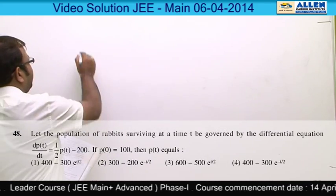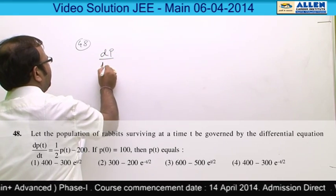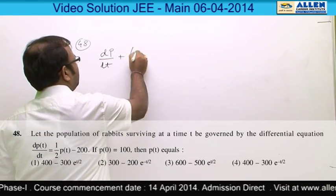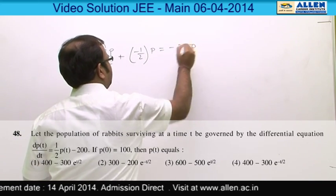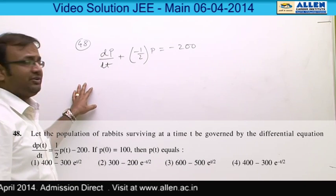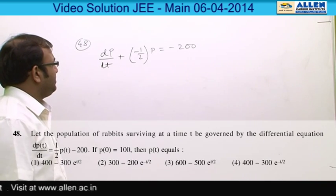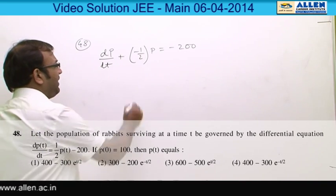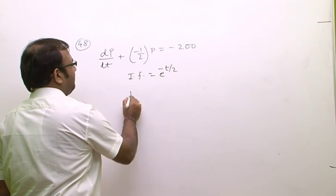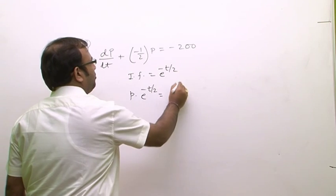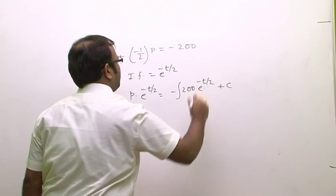Question 48: the differential equation for rabbit population is rearranged as dP/dt - (1/2)P = -200. This is a linear ODE with integrating factor e^(-t/2). Multiplying through, we get P·e^(-t/2) = ∫(-200)·e^(-t/2) dt + C.